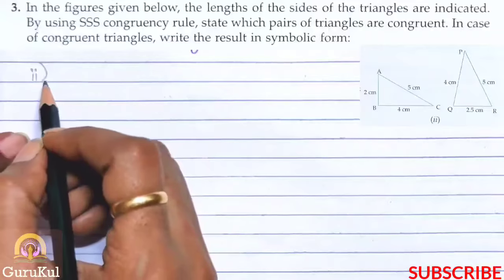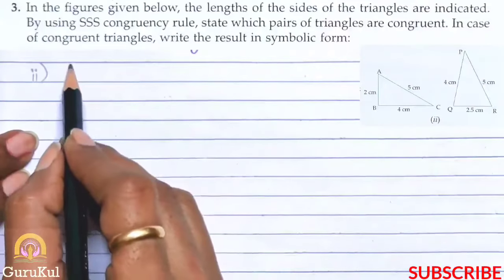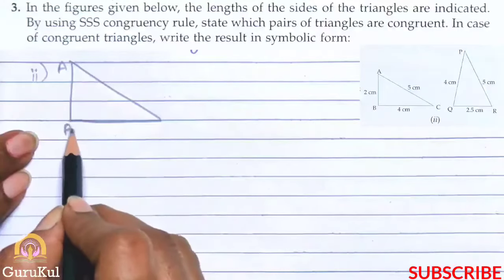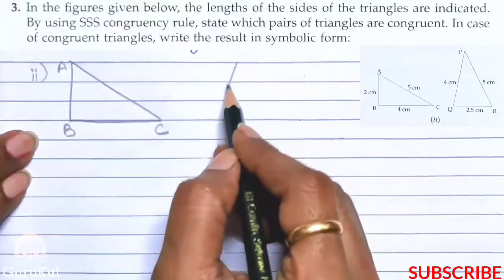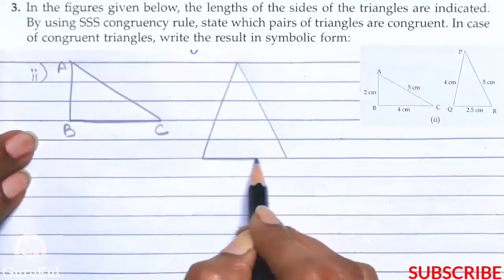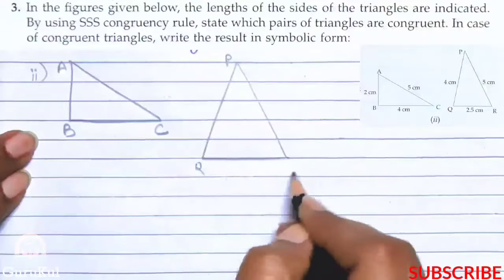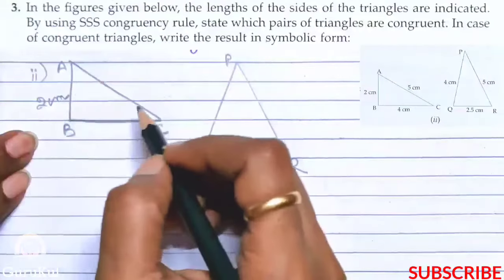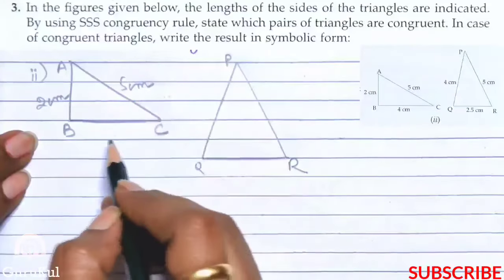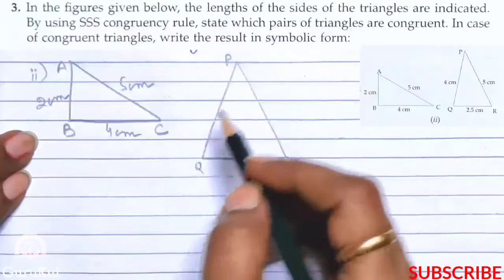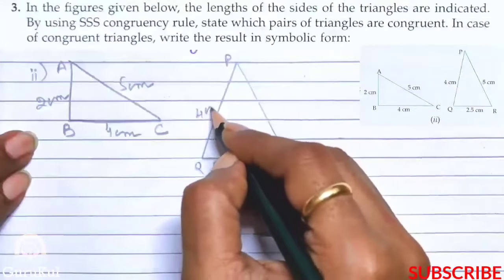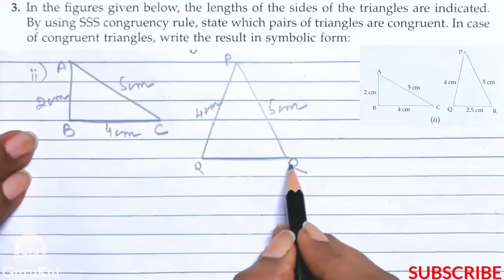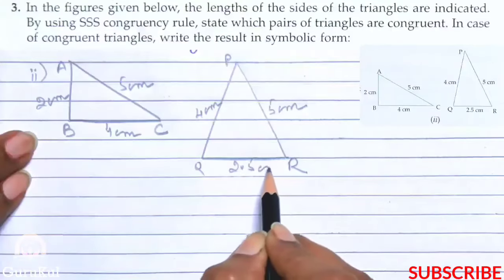Now the second part of question number 3. Let me draw the figure. First triangle is A, B, C. Second triangle is P, Q, R. AB measures 2 cm, AC is 5 cm, BC is 4 cm. Here PQ is 4 cm, PR is 5 cm, and QR is 2.5 cm.